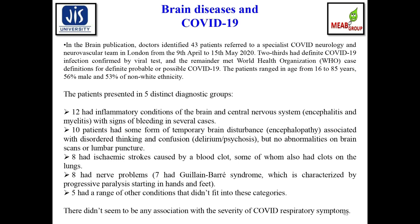In that study, two-thirds had confirmed COVID-19 by viral test; patients ranged in age from 16 to 85 years, 56% were male, and 53% belonged to non-white ethnicities. Five distinct diagnostic groups were identified: 12 had inflammatory brain and CNS conditions with signs of bleeding in severe cases; 10 had temporary brain disturbances with confusion but no abnormalities on scan; 8 had ischemic stroke caused by blood clots; 8 had nervous system problems characterized by progressive paralysis starting in hands and feet; and 5 had other conditions.